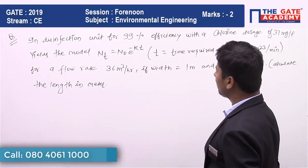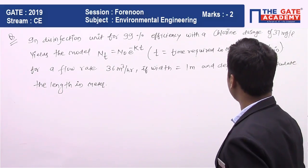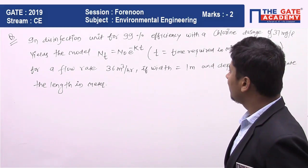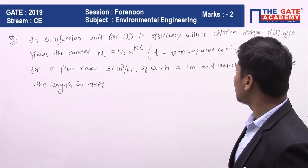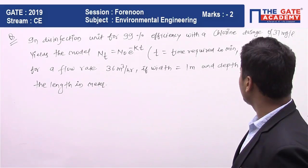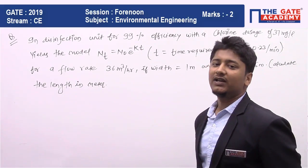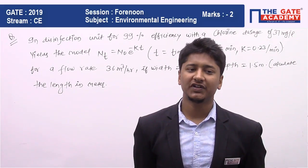Where K is 0.23 per minute, for a flow rate 36 meter cube per hour, if width equal to 1 meter, if depth equal to 1.5 meter, then calculate the length in meters. So for this question, first you have to read and whatever data you have, first note it down.